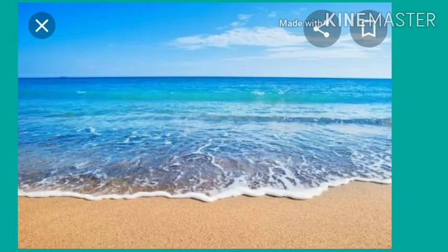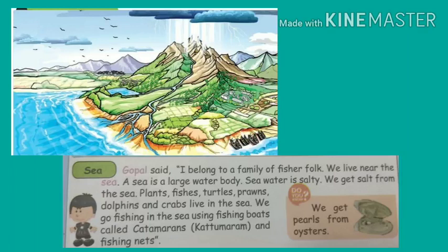About the sea: the student Gopal said, I belong to a family of fisher folk. We live near the sea. A sea is a large water body. Sea water is salty. We get salt from the sea. Plants, fishes, turtles, prawns, dolphins, and crabs live in the sea. We go fishing in the sea using fishing boats called catamarans and fishing nets.